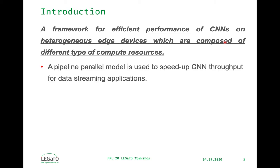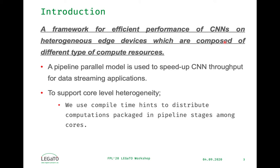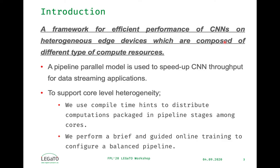A pipeline parallel model is used to speed up CNN throughput for data streaming applications, for example image classification applications on mobile devices. And to support core level heterogeneity, we use compile time hints to distribute computations packaged into pipeline stages among the cores. We then perform a brief and guided online training to configure a balanced pipeline.